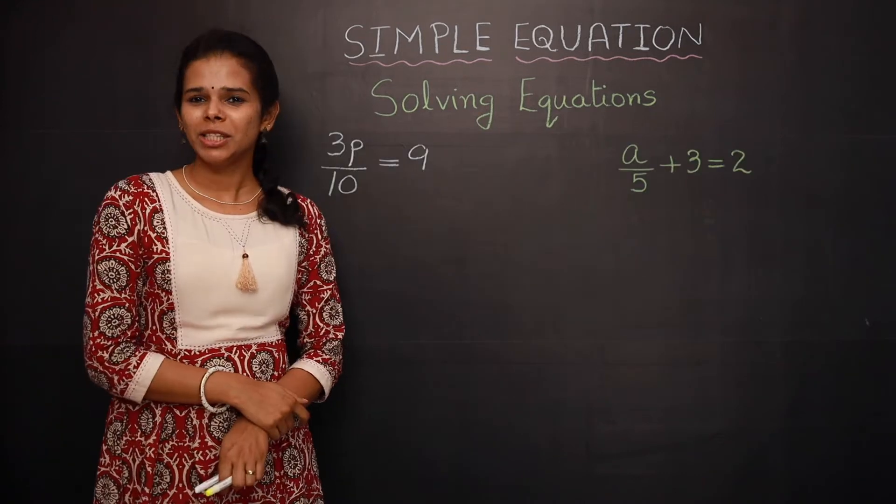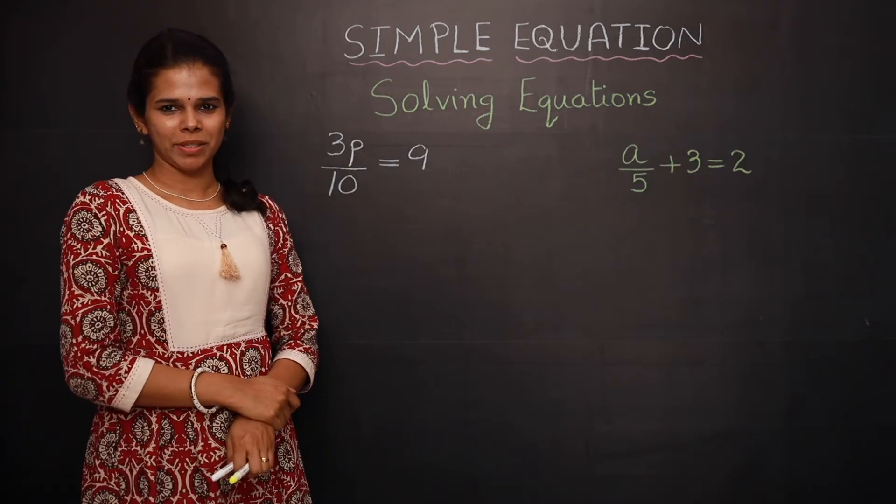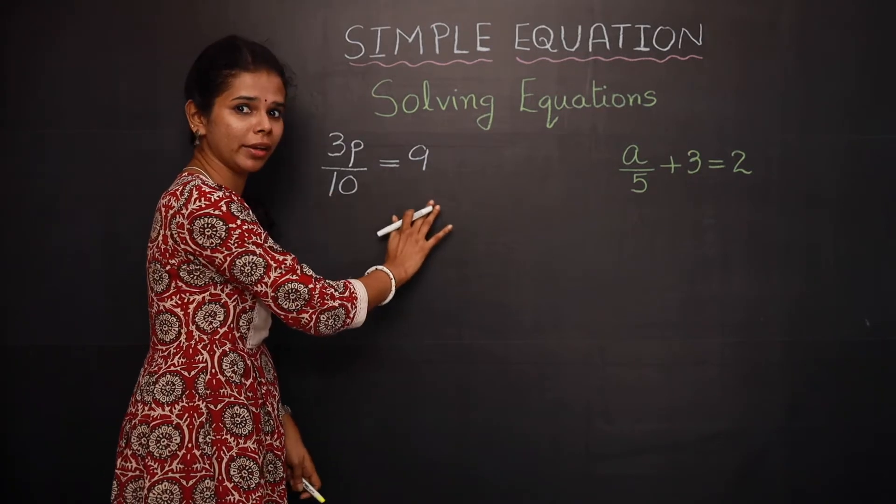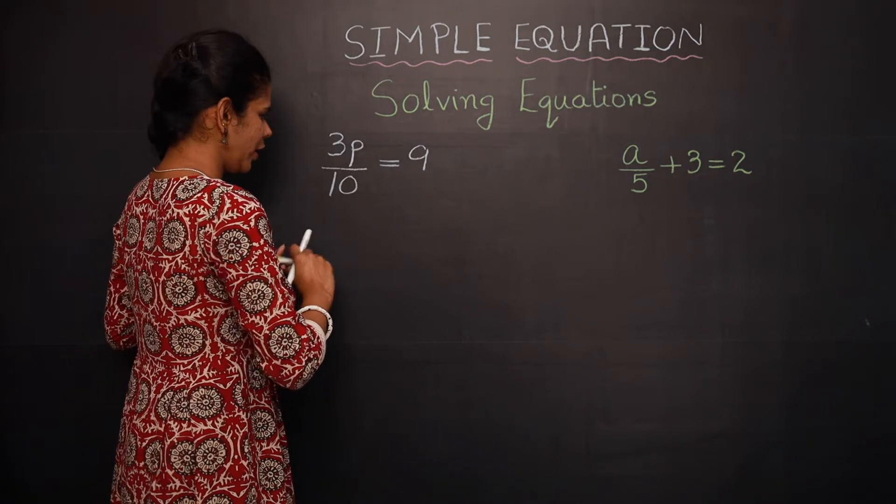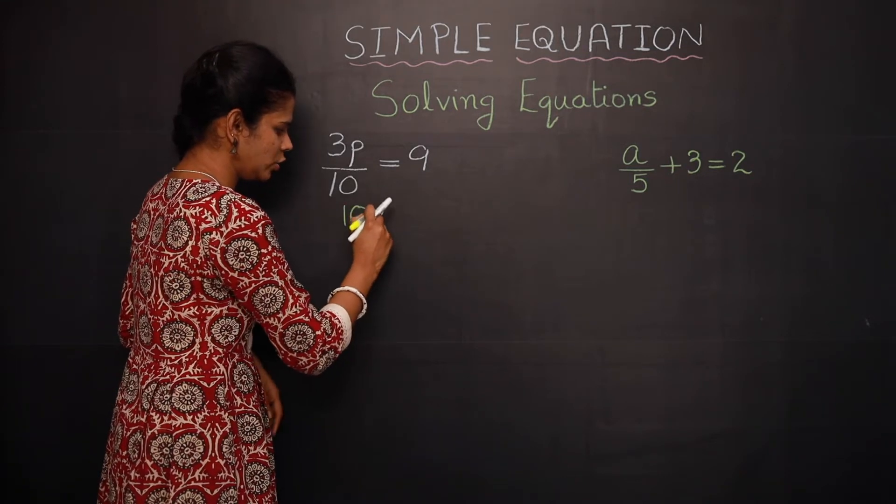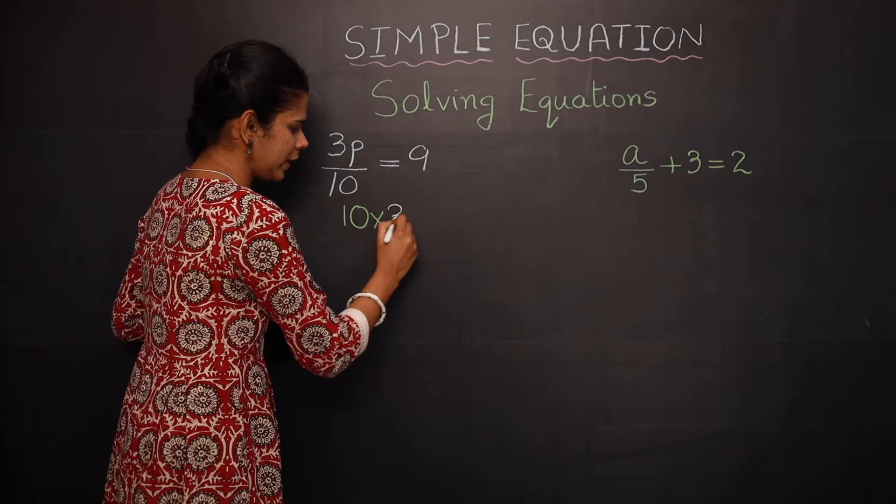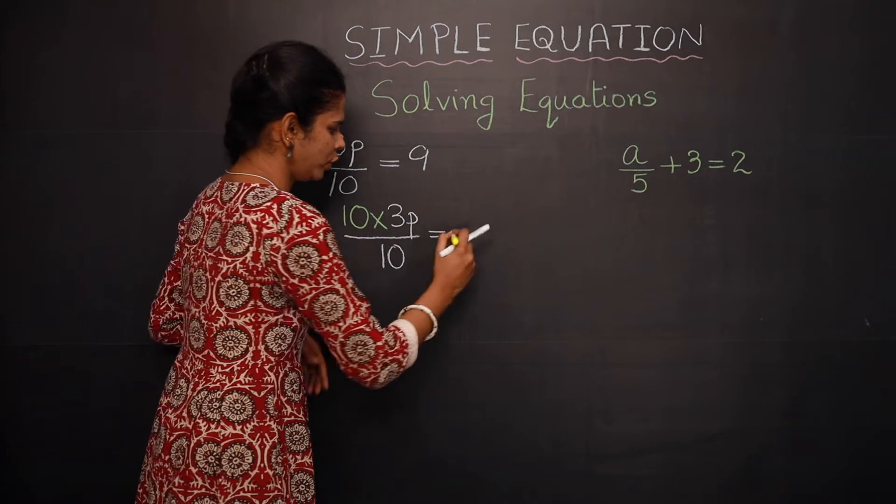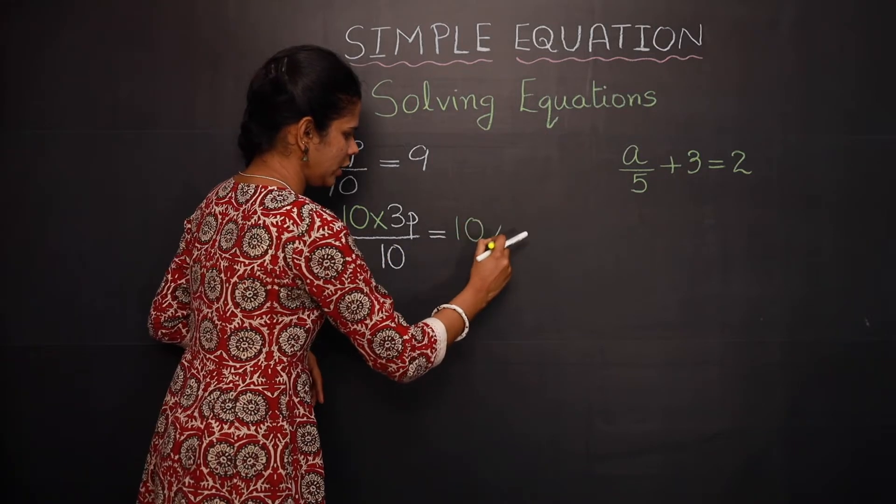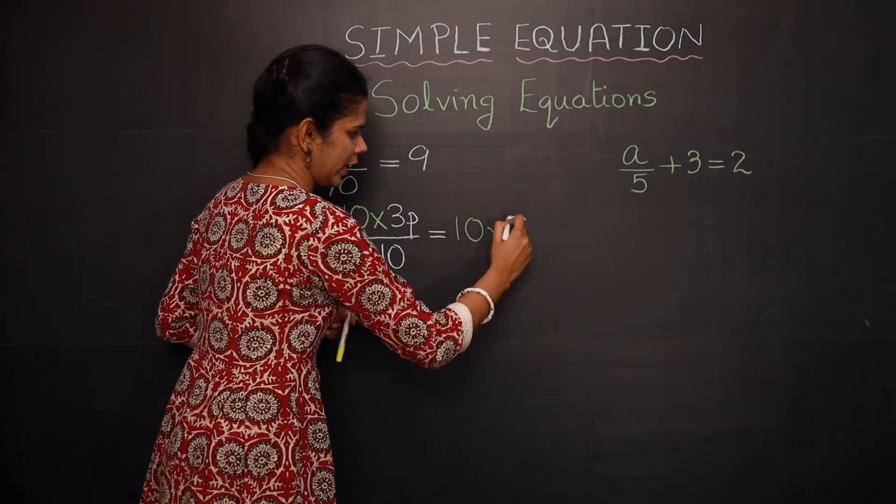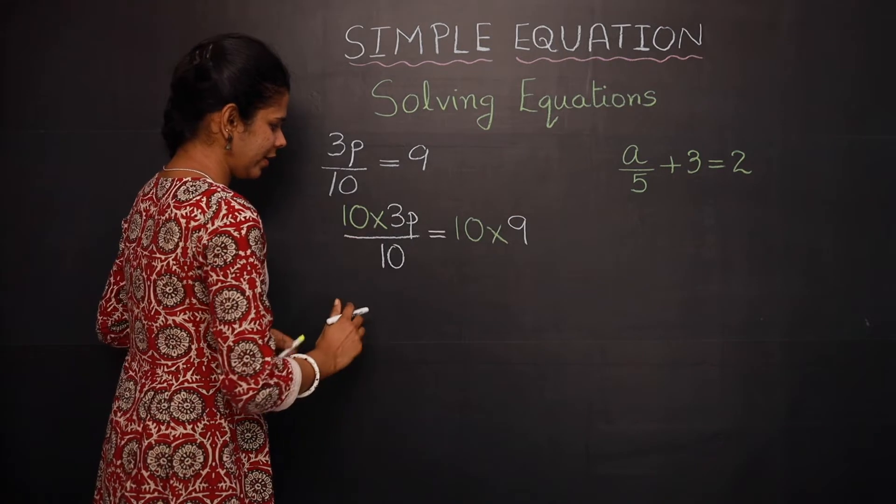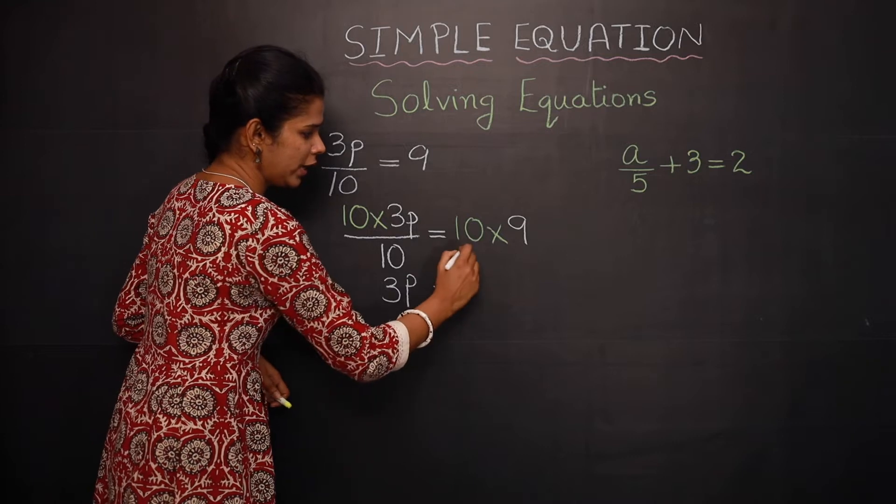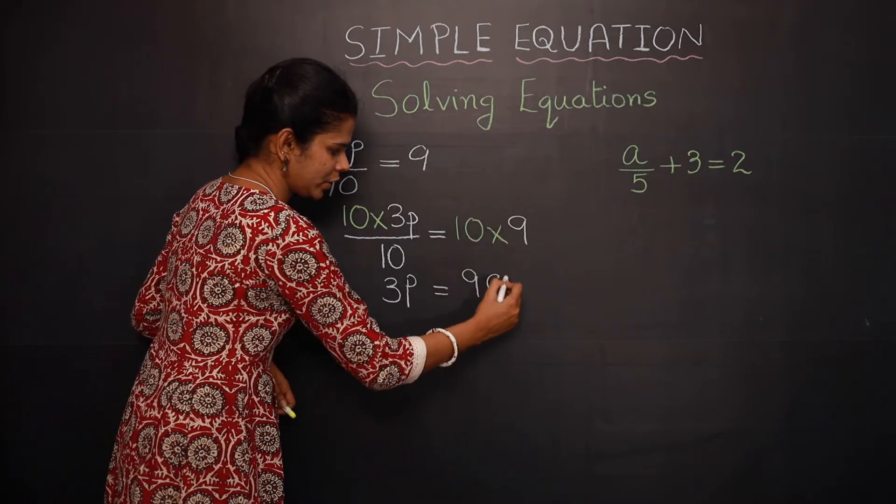Now let's move on to the next set of examples. Here 3p divided by 10 is equal to 9. So here you can multiply 10, 10 into 3p by 10 is equal to 10 into 9. So here 10 10 gets cancelled, so it becomes 3p is equal to 10 into 9, it is 90.